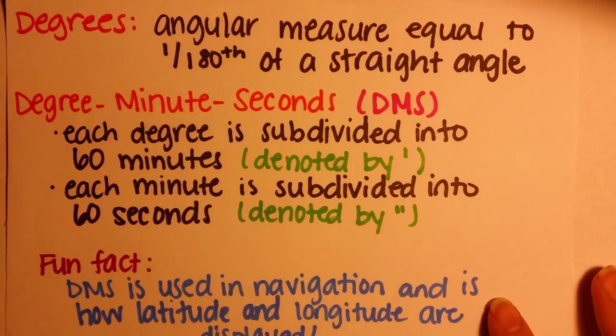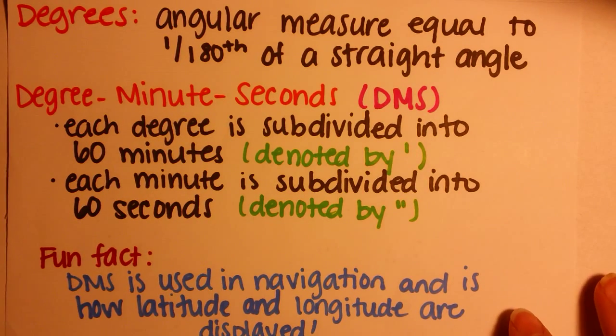First, degrees are angular measure equal to 1/180th of a straight angle.